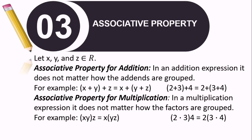Next, let's proceed with number 3, associative property. For associative property for addition, in an addition expression it does not matter how the addends are grouped. As long as the operation used is addition, they will come up with the same answer. For example, 2 plus 3 plus 4 — you can add 2 plus 3 first before 4, or you can add 3 and 4 first then add to 2, and the answer is still the same. For associative property for multiplication, the same idea applies — as long as multiplication is the operation used, regardless of how you group the factors, the answer will be the same.